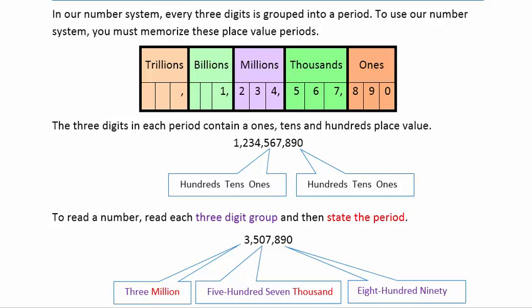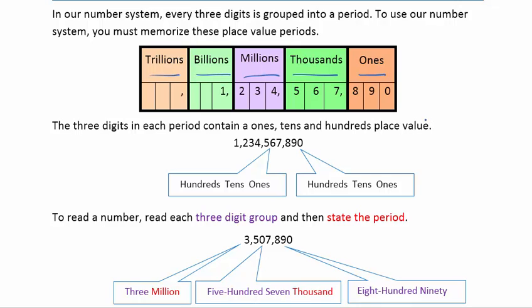To use our number system, you're going to have to memorize these place value periods. We have the ones period, which is the smallest period. Then we go to the thousands, the millions, the billions, and then finally the trillions. Now in each of those periods, the same pattern occurs. The three digits in each period contain a ones, tens, and hundreds place. So looking at this first period, which has 890 in it, that's the ones period, but in there we have the ones, the tens, and the hundreds.